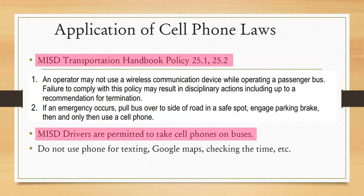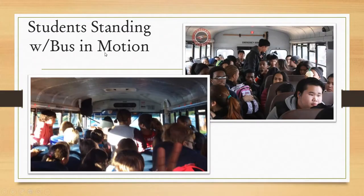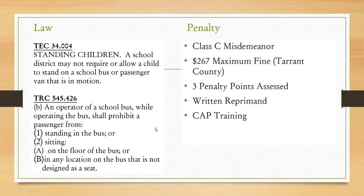Now let's talk about students standing with the bus in motion. I recognize you may be driving a school bus that is overcrowded. In those moments, your objective is to get kids seated and as much out of the aisle as possible. We can't have a student in the middle of the aisle — that is not a designed seat. We can't drive with a student standing like that, though students who have at least part of their body on a seat are acceptable. We also can't drive with students standing up in their seat, even though they're behind a seat.